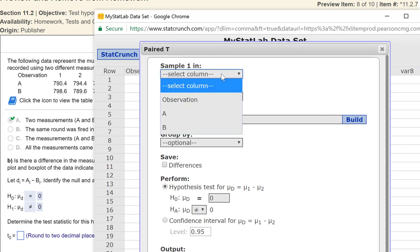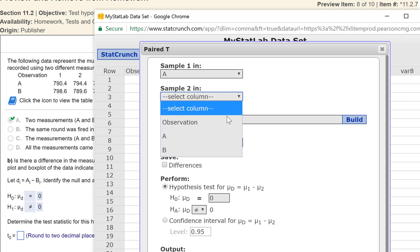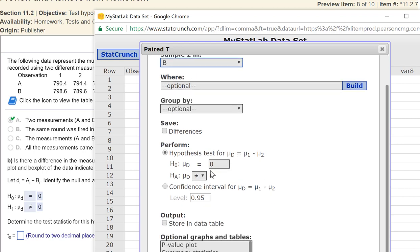And so we'll let column A, B1, and then column B. We could save the differences. We're not going to. And again, notice we were doing mu1 minus mu2, which is exactly the same as we have on our problem, A minus B, where A is 1, B is 2. So make sure all that lines up. Take an extra second to do that. And press Compute.